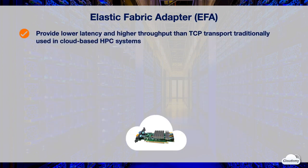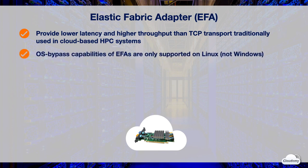EFA provides lower latency and higher throughput than the TCP transport traditionally used in cloud-based HPC systems. It improves the performance of inter-instance communication, critical for scaling HPC and machine learning applications. The OS bypass capabilities of EFA are only supported on Linux and not supported for Windows. If you attach an EFA to a Windows instance, it functions as an ENA without the OS bypass.